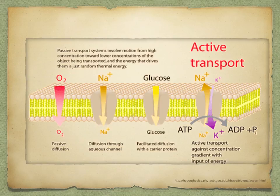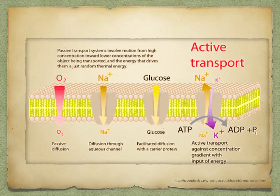Transport over short distances, such as between adjacent cells, is done by diffusion, osmosis, facilitated diffusion, or active transport. Here you can see the different types of transport into a cell: passive diffusion, facilitated diffusion, and active transport.